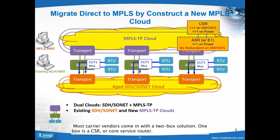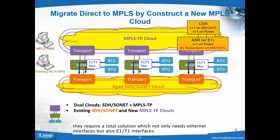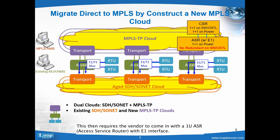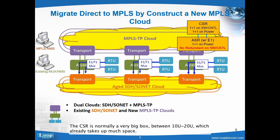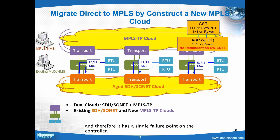Most carrier vendors come in with a two-box solution. One box is a CSR, or core service router. When the MCC vendor comes out with the tender specifications, they require a total solution which needs not only Ethernet interfaces but also E1T1 interfaces. The CSR only has Ethernet interfaces and therefore cannot meet the specs. This requires the vendor to add a new ASR, or access service router, with an E1 interface. The CSR is normally a very big box, between 10 to 20U, which already takes up much space. The E1 interface on the ASR has 1+1 power but no redundancy on the switch component, giving it a single failure point on the controller.